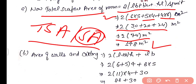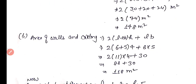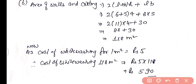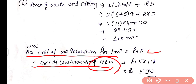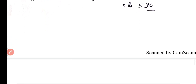Area of four walls and ceiling = 2(l + b) × h + l × b = 2(6 + 5) × 4 + 6 × 5 = 88 + 30 = 118 m². Cost of white washing at rupees 5 per m² = 5 × 118 = rupees 590. This is the total cost of white washing the four walls and ceiling of the room. That concludes worksheet number 40 — please subscribe to the channel and share this video. Thanks for watching.